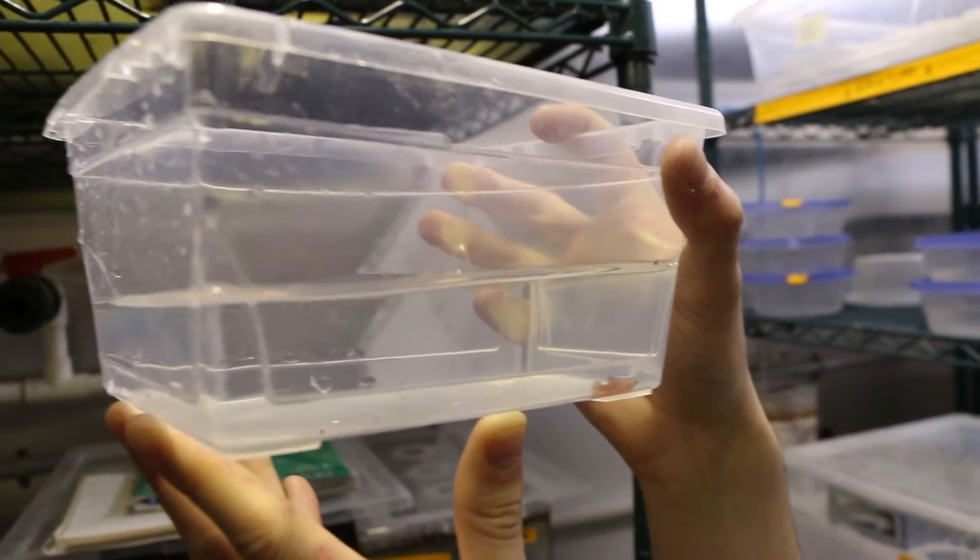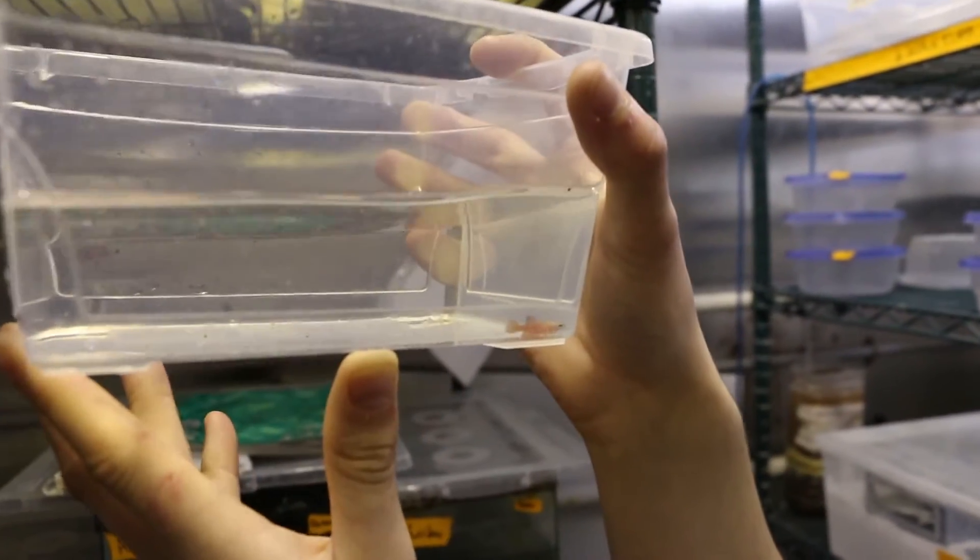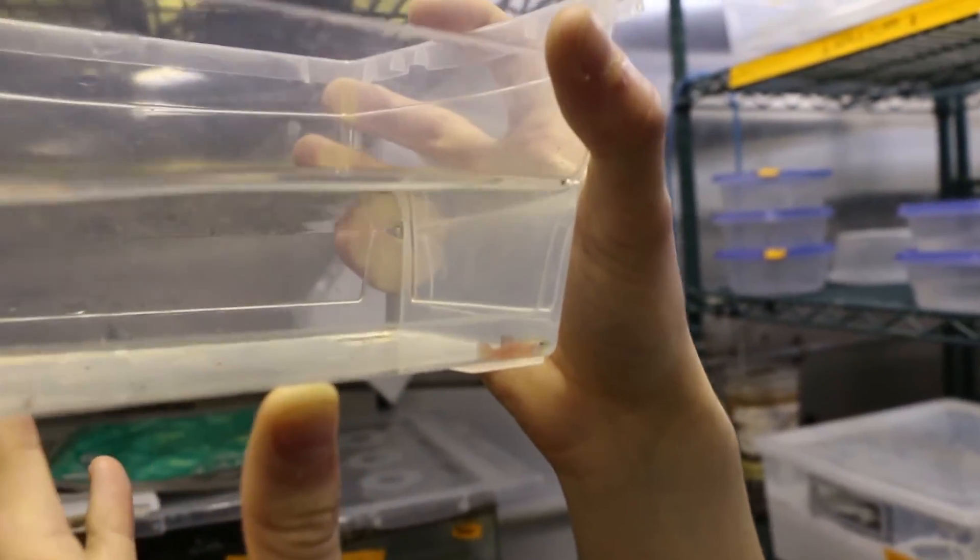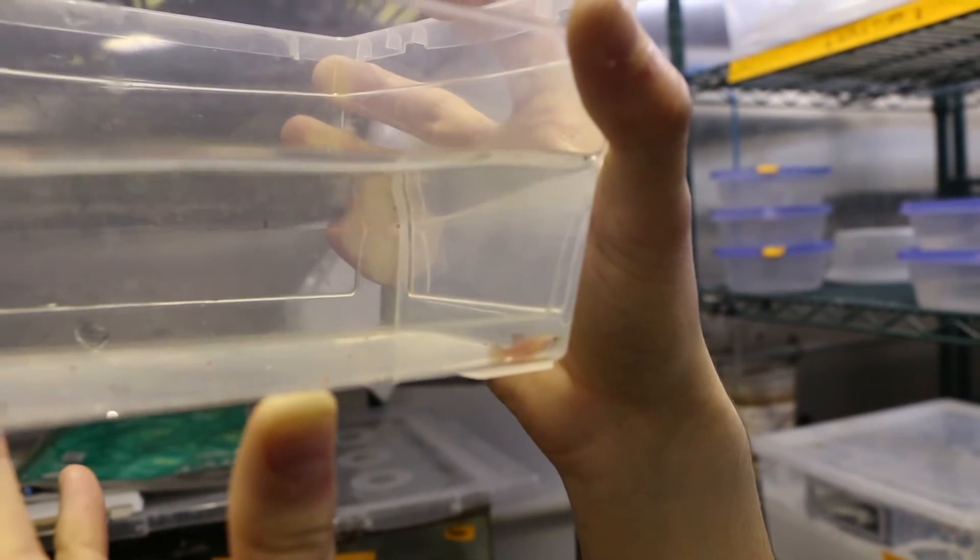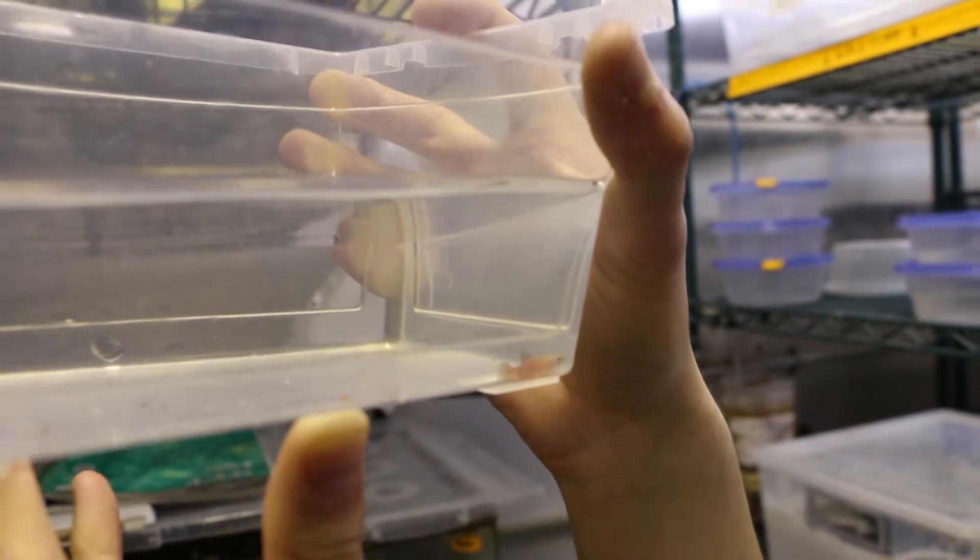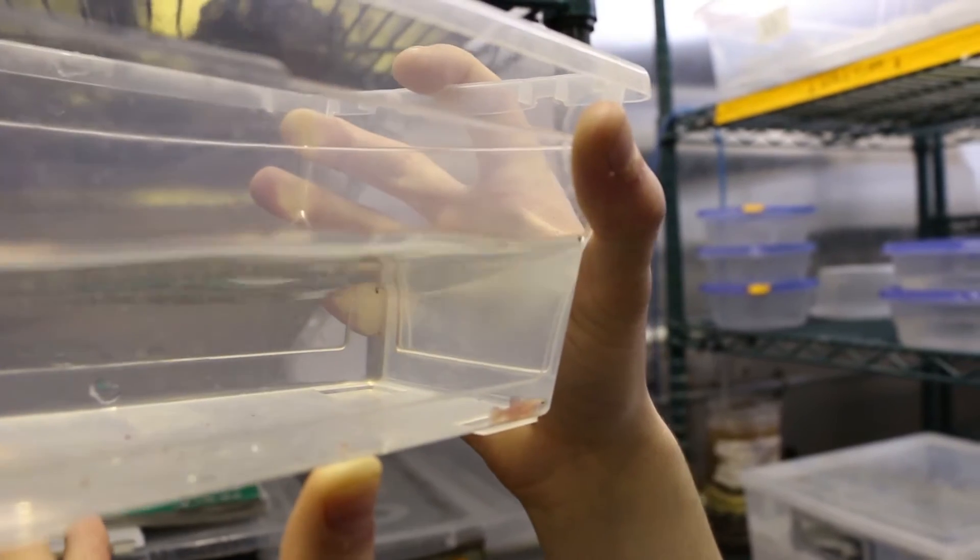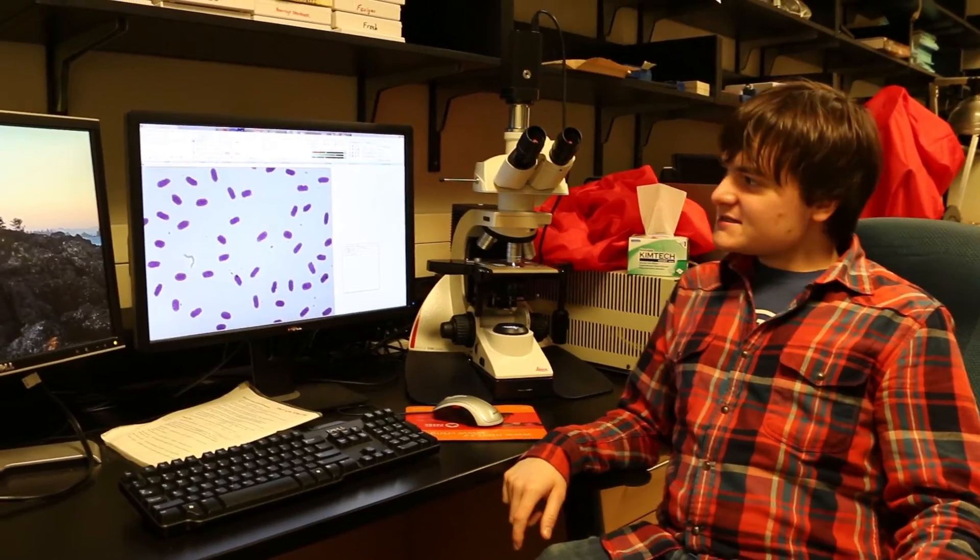So this is a Simpsonichthys marginatus. It's a type of South American annual killifish. And this here is a little male, and you can tell that because he's got those beautiful colors to show off to the ladies.